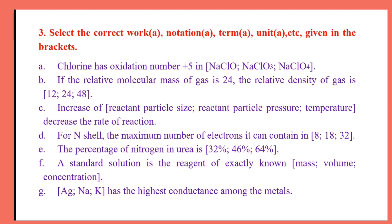Number E: The percentage of nitrogen in urea is approximately 32%, 46%, or 64%. Urea has the formula CO(NH₂)₂, and the percentage of nitrogen is 46%.